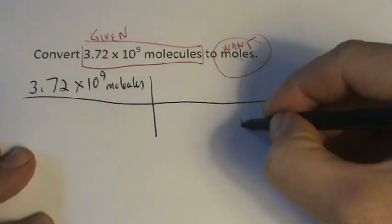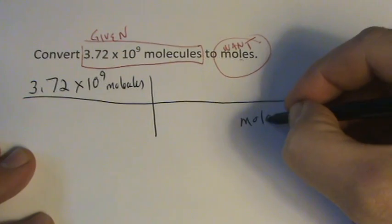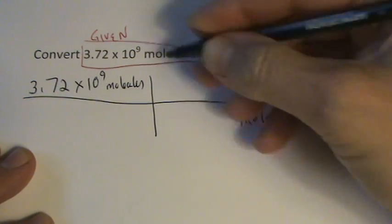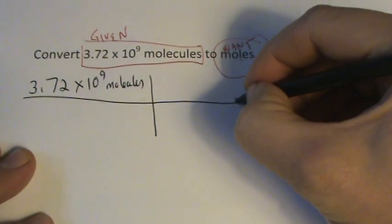So we know we'll have moles on the bottom, no, we'll have molecules on the bottom if we want to cancel molecules out. And then moles has to be on the top because that's what we want to end up with.